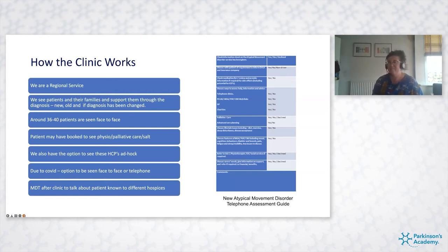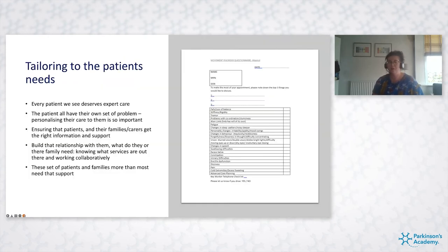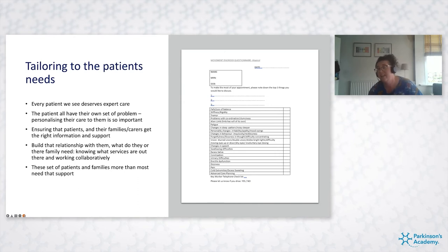After clinic we have another meeting where we link up with palliative care consultants and the different hospices around Newcastle. We discuss patients already involved with hospices — they have their own occupational therapists, social workers, and physios — and we discuss anyone we're worried about or new patients who need referral. Every patient deserves expert care and needs to be referred to appropriate healthcare professionals. Every patient has their own set of problems, so it's important to personalise their care. Carer strain has a massive impact and has been made worse by COVID.